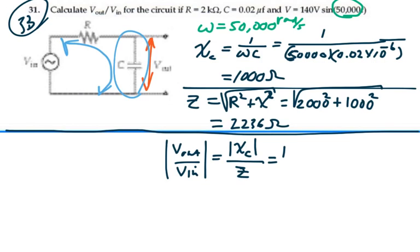1,000 ohms over 2,236 ohms, and that is 0.447. So the ratio of our output voltage to our input voltage is 0.447.